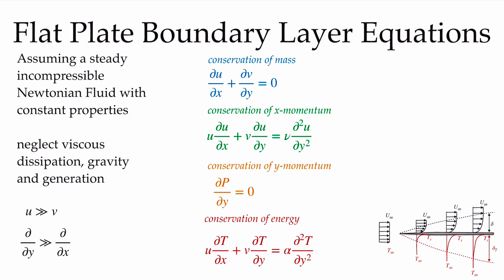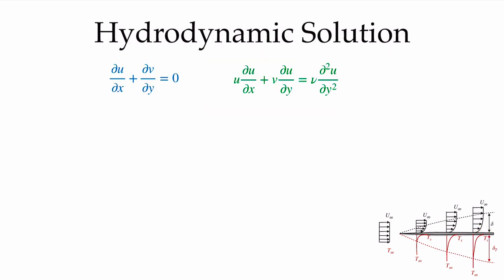Here's our flow situation — a flat plate boundary layer. We have a constant free stream velocity and temperature impinging upon a solid plate, with development of a momentum boundary layer and a thermal boundary layer, as the flow adjusts to the zero velocity no-slip condition on the surface. For the flat plate, the pressure gradient term in the x-momentum equation is zero, because the streamlines far away move perfectly straight. There's no acceleration or deceleration, so pressure is everywhere p-infinity, and the pressure gradient is zero. This leads us to the Blasius solution — the laminar flat plate boundary layer solution.